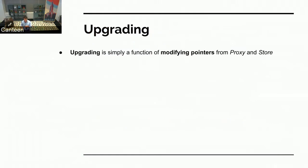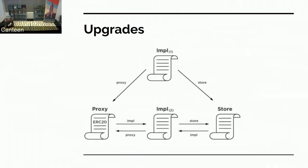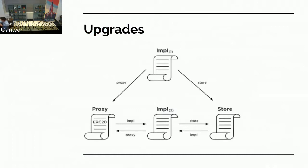Upgrading the contracts is as simple as modifying pointers in proxy and store. The original impl — let's say impl one — had that chain going from proxy to impl to store. All we do when we need to modify business logic is swap out that middle contract. The interface of the ERC-20 contract is the same; you still interact with that proxy contract. It'll pass through a new intermediate impl, and the balances are still where they were — we didn't have to migrate anything. The new impl will point to the existing store, the new chain is formed, and we didn't have to migrate any balances.